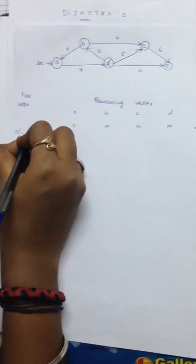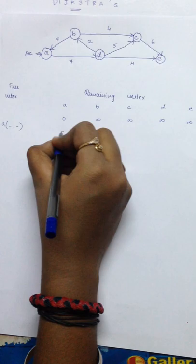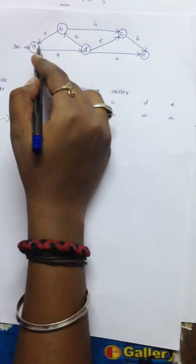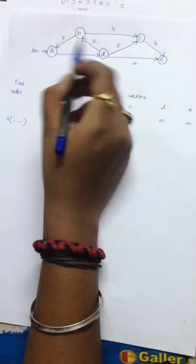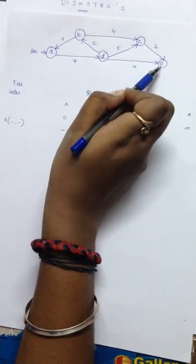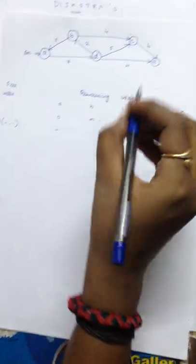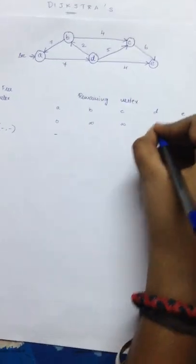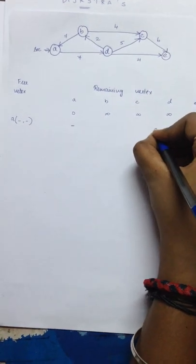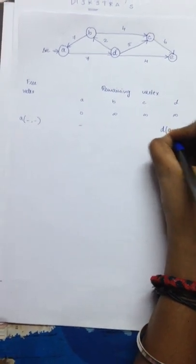A dash comma dash. From A, you cannot connect to A. From A to B, there is no connection. A to C, no connection. A to E, no connection. Only D is connected directly. So first fill up D. D element can be accessed through A at a rate of 7.